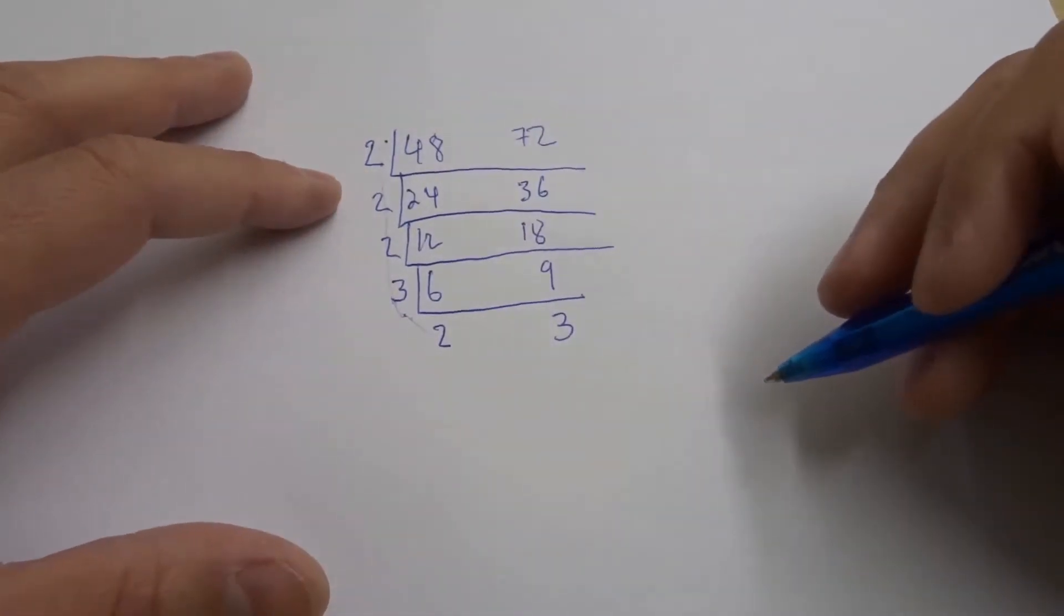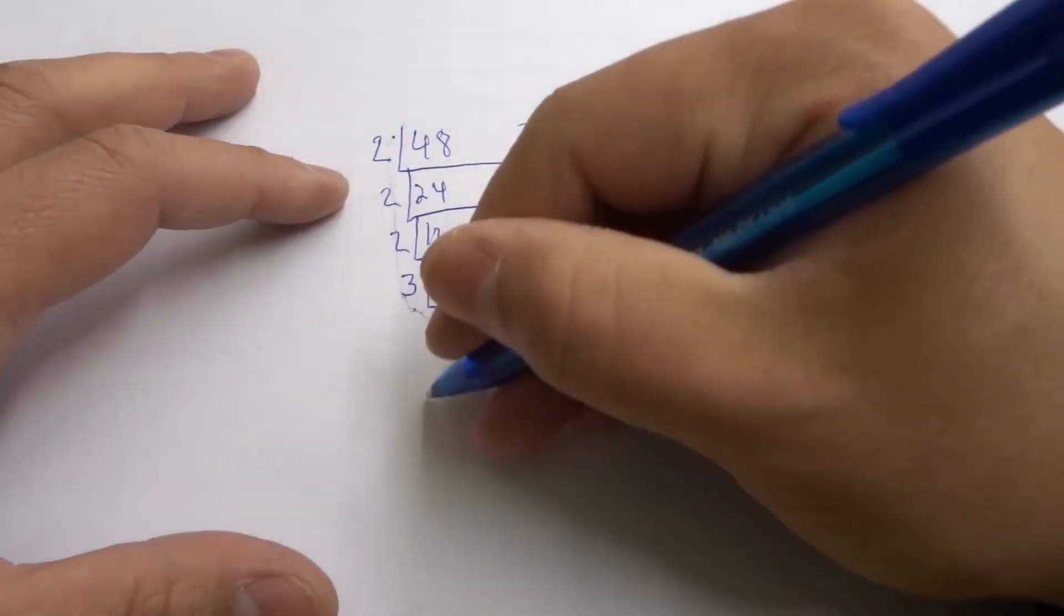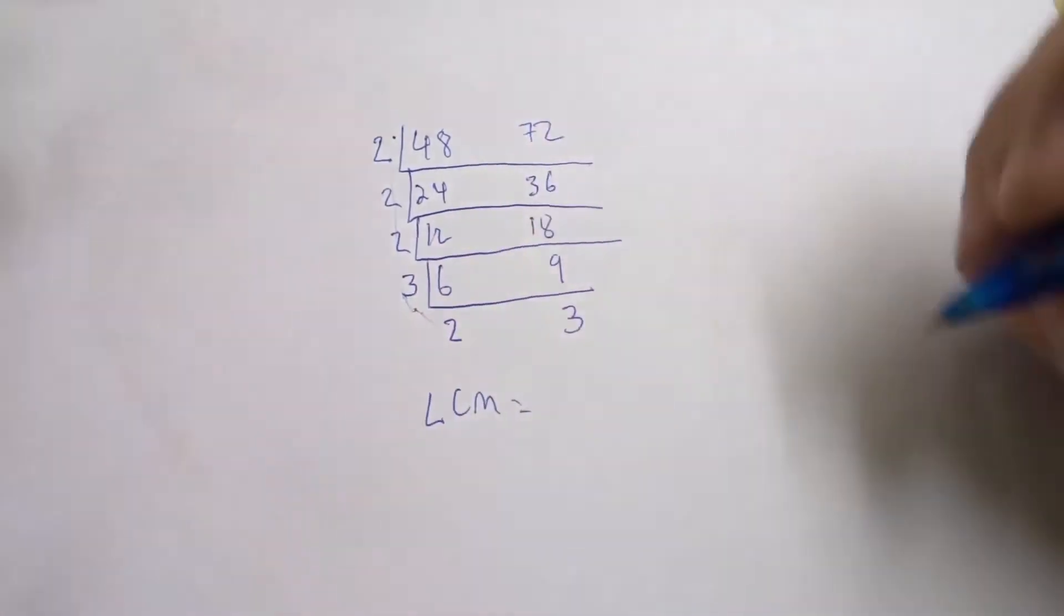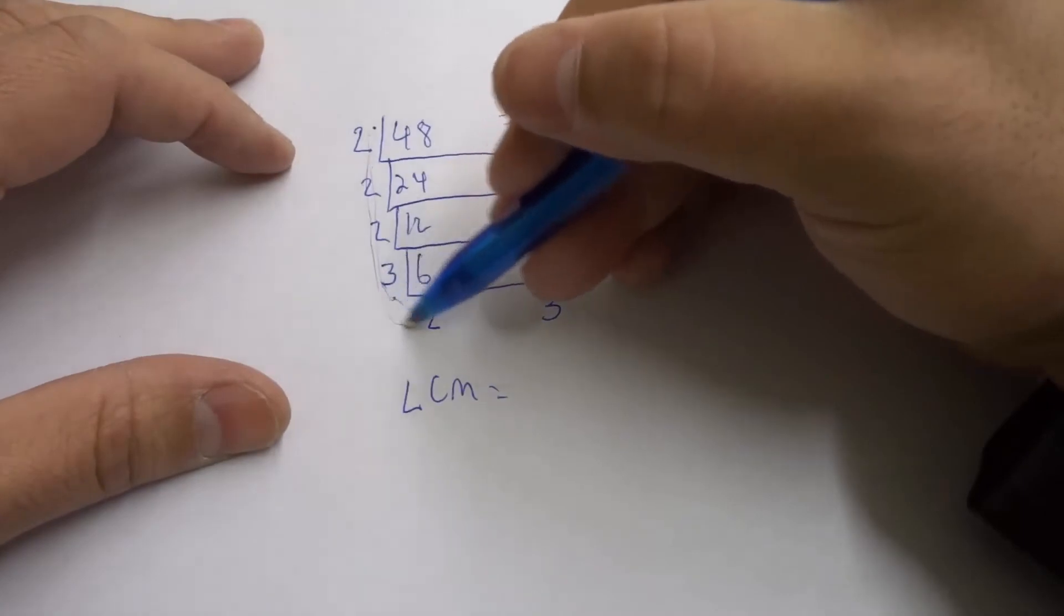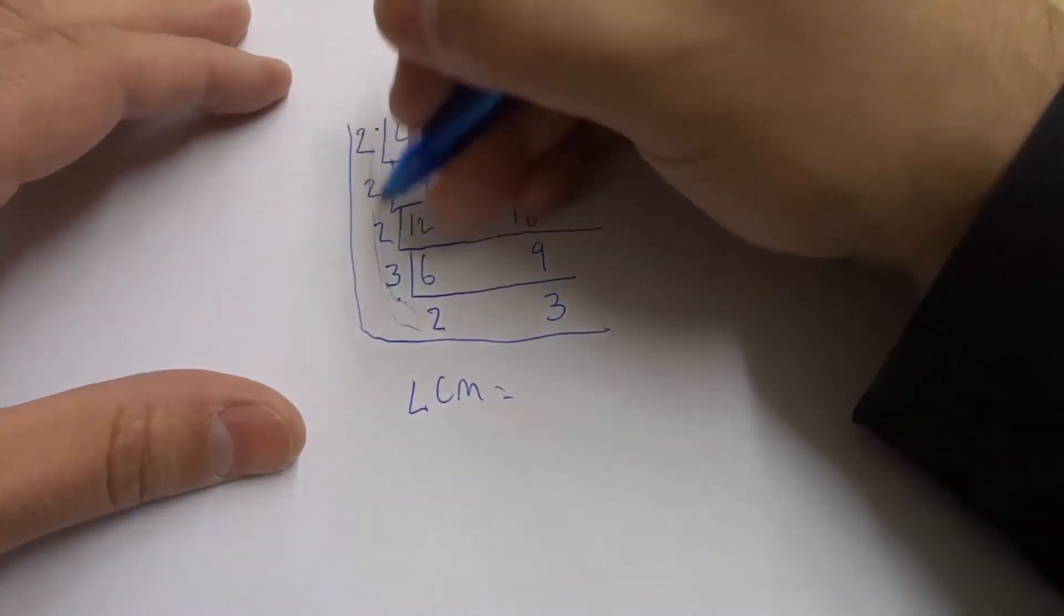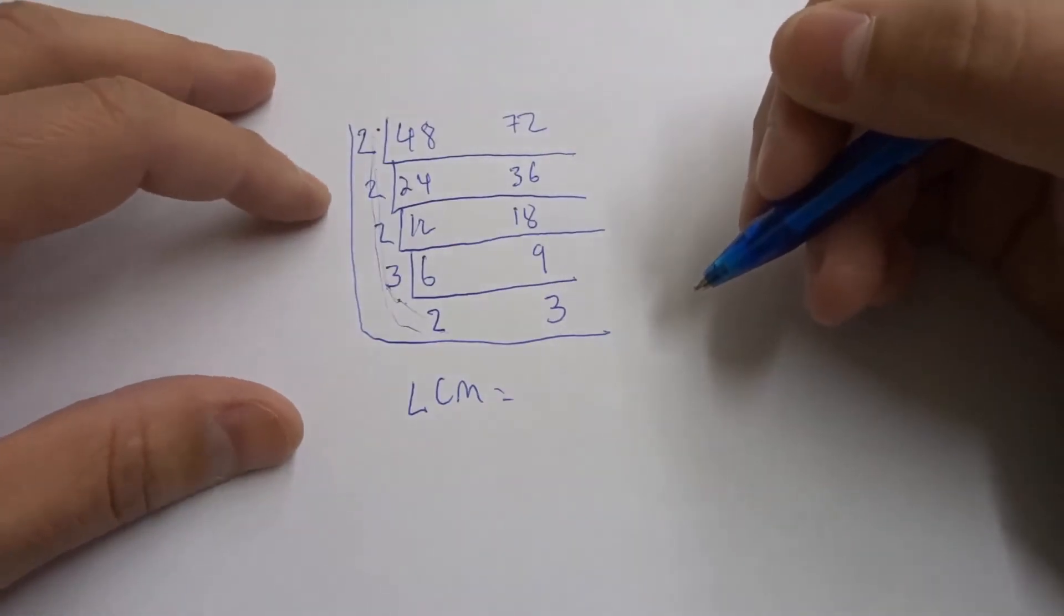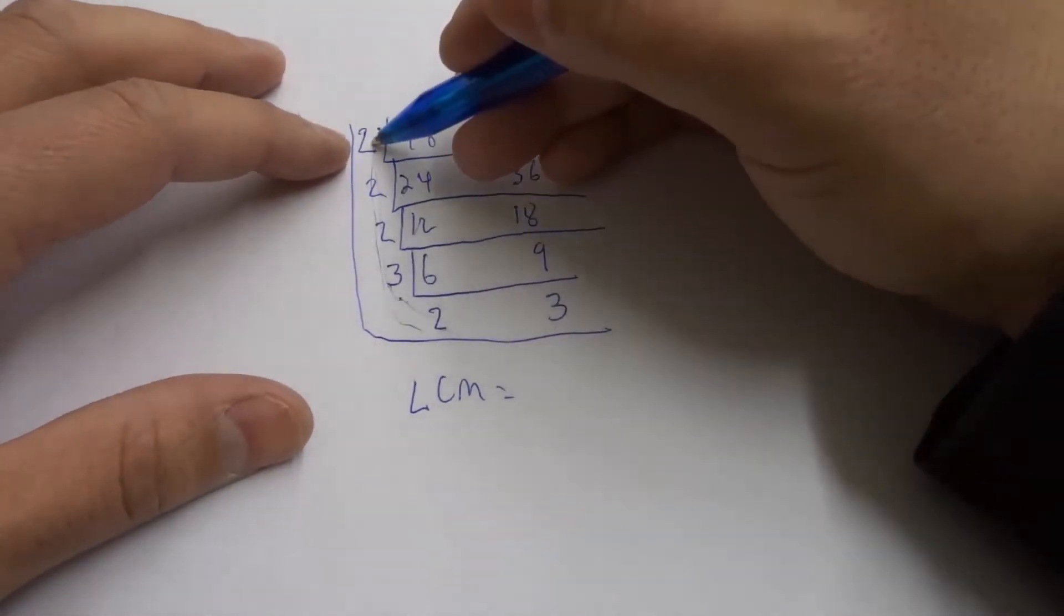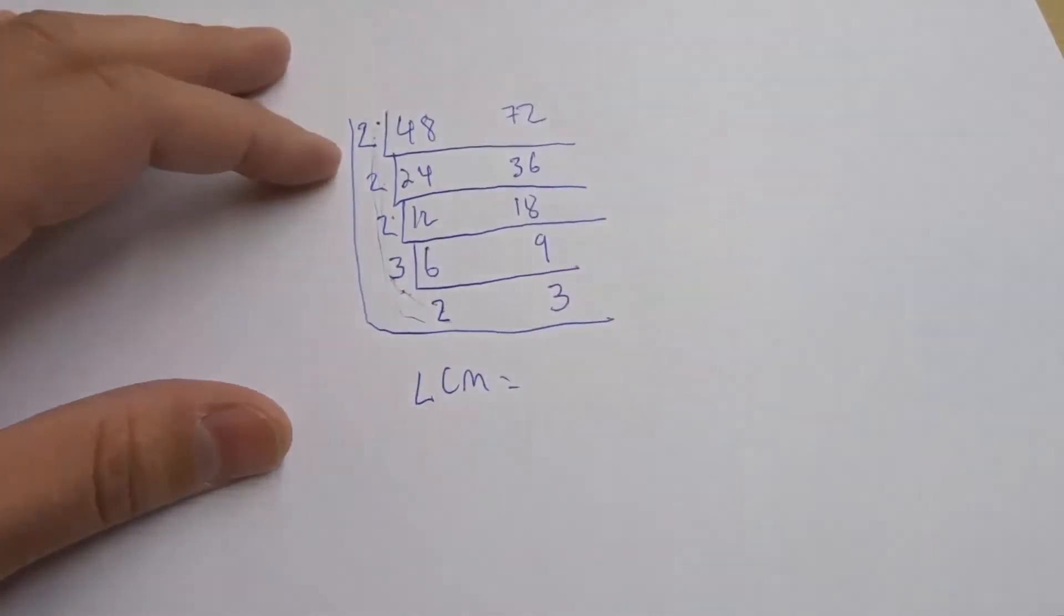Now, to actually find the LCM, the lowest common multiple. So LCM. All that we have to do is take all of these numbers all across here. So we're taking all these. Let's draw another line like this. All of these in the outer bracket, and we're multiplying them together. So what we have is 2 times 2 times 2 times 3 times 2 times 3.